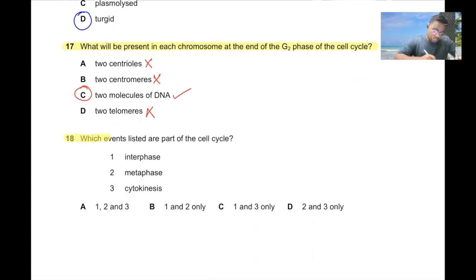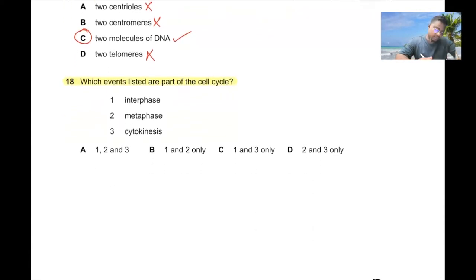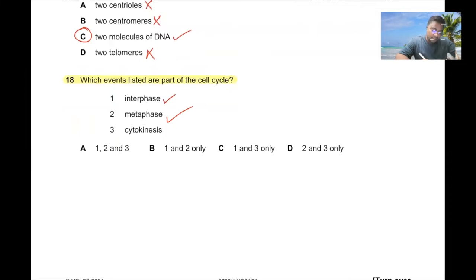Question number eighteen. Which events listed are part of the cell cycle? Interphase, metaphase, and cytokinesis are all part of the cell cycle. So 18A is the correct answer.